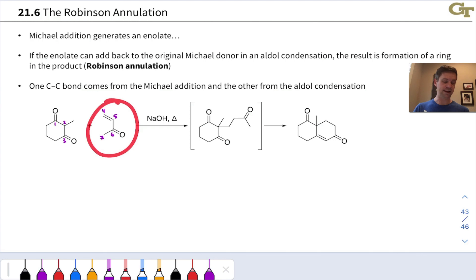And here is our Michael acceptor. Carbon four is the beta carbon, as we've numbered them here, and so that's going to be the carbon that actually accepts electrons from carbon two. So in the product of Michael addition, there's a new bond between carbon two and carbon four.